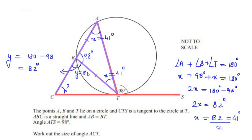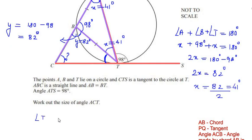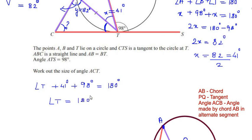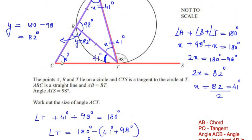Now that y is 82 degrees, we need to find angle T in the straight line so we can use triangle BCT. Since the points form a straight line, angle T plus 41 degrees plus 98 degrees equals 180 degrees. Therefore angle T equals 180 minus 41 minus 98, which gives angle T as 41 degrees.